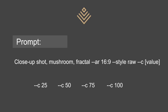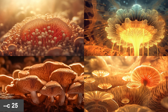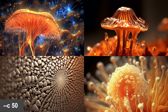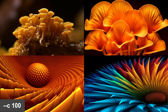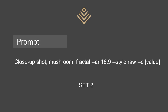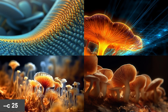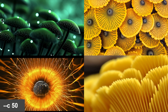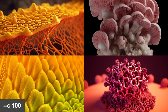I also want to see what happens if I add the style raw, which is the less opinionated style versus the regular 5.1 default. I'm not expecting huge differences, but let's find out. Here is C 0, 25, 50, 75, and 100. And then set two, chaos zero, 25, 50, 75 — these are interesting — and 100.